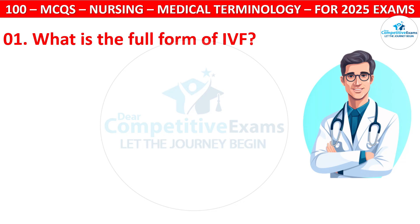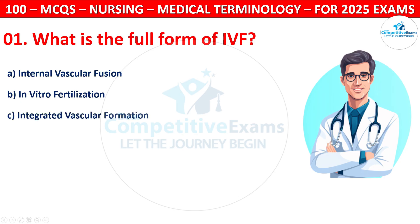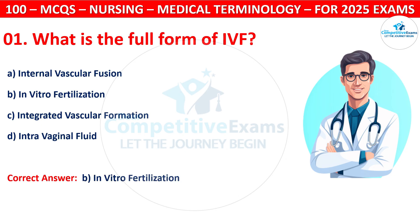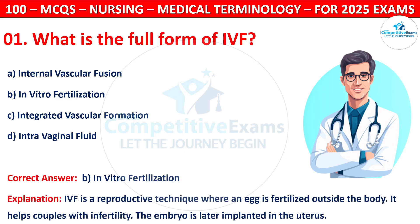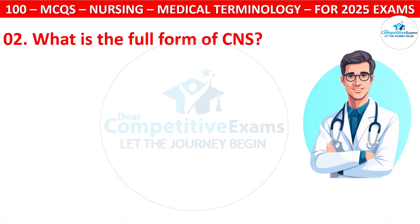Question 1: What is the full form of IVF? Options are: Internal Vascular Fusion, In Vitro Fertilization, Integrated Vascular Formation, or Intravaginal Fluid. The correct answer is B, that is In Vitro Fertilization. IVF is a reproductive technique where an egg is fertilized outside the body. It helps couples with infertility. The embryo is later implanted into the uterus.